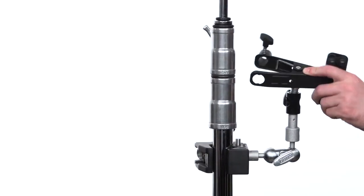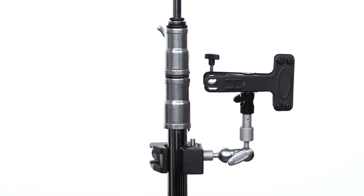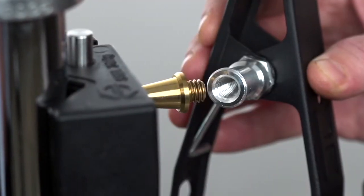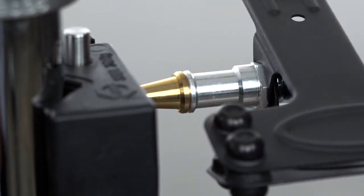Another mounting option is the baby 5/8 inch stud on the side of the clamp. Lastly, there is a female 3A16 thread tapped into the baby stud.